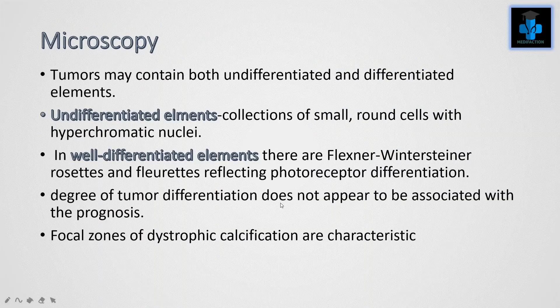On microscopy, tumors may contain both undifferentiated and differentiated elements. In undifferentiated elements, there will be collections of small round cells with hyperchromatic nuclei. In well-differentiated elements, there are Flexner-Wintersteiner rosettes and fleurettes reflecting photoreceptor differentiation. The degree of tumor differentiation does not appear to be associated with prognosis. Focal zones of dystrophic calcifications are characteristic.